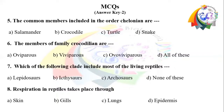Question 5 right option is C — turtle; the order Chelonia is turtle. Question 6 right option: the members of family Crocodilidae are oviparous. Question 7 right option A — Lepidosauria; clade includes most of the living reptiles. Question 8 right option C — lungs; respiration in reptiles takes place through lungs.